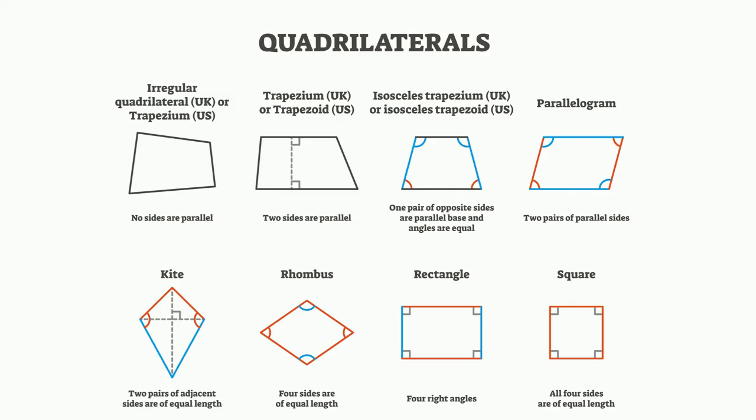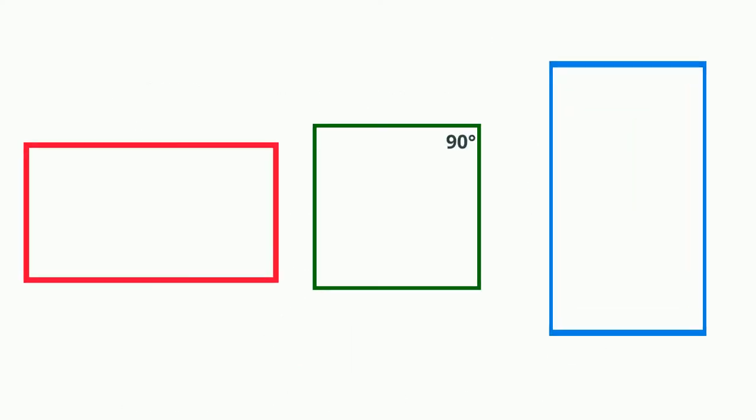Convex quadrilaterals have four angles and each of these angles are less than 180 degrees.